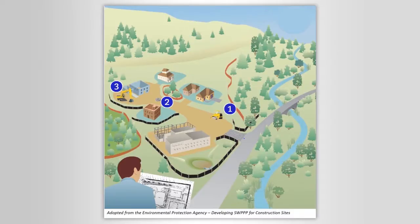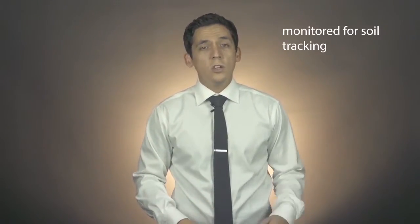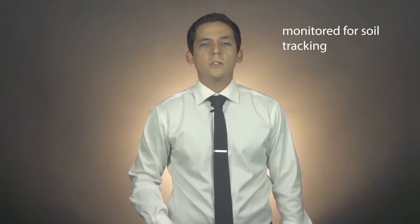Other hotspot locations occur at the interfaces between construction sites and the adjacent land. These interfaces can be easily identified as the construction site entrances and exits, as well as the overall perimeter of the construction site. Construction exits and entrances should be monitored for soil tracking by construction vehicles, which if not managed properly can easily track loose soil and pollutants outside the construction site.